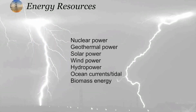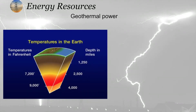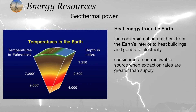Now let's talk about geothermal power. As everybody knows, inside the earth there is lava. If we go deep inside the earth — up to 4,000 miles deep — we can have a temperature of 900 degrees Fahrenheit, which is very high. This heat can be utilized for the production of energy or electricity.